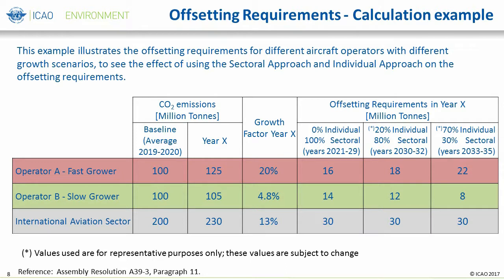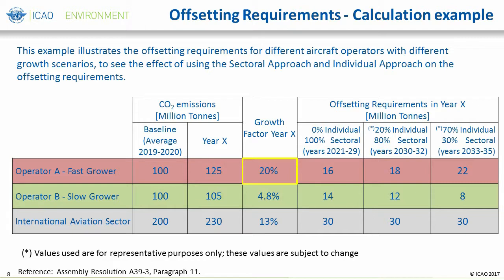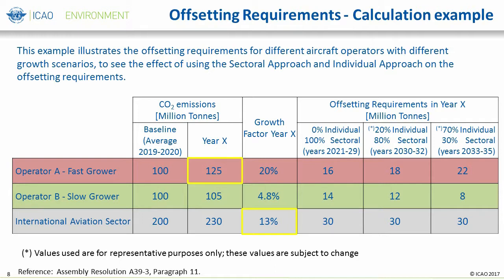This example illustrates the offsetting requirements for different aircraft operators with different growth scenarios to see the effect of using the sectoral approach and individual approach on offsetting requirements. Looking at Operator A, who is considered a fast grower: in year X, Operator A's growth factor is 20%, but the international aviation sector in total had a growth factor of 13%. Under the 100% sectoral approach, Operator A's offsetting requirements are 16 million tons of CO2, calculated by multiplying the sectoral growth factor of 13% with Operator A's emissions of 125 in year X. The offsetting requirements of 16 million tons is less than the 25 million tons of Operator A's actual increase of emissions, due to the use of the sectoral growth factor, which is less than the individual growth factor of Operator A.